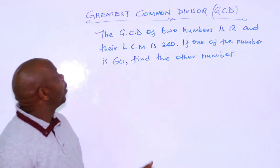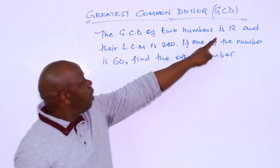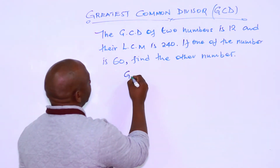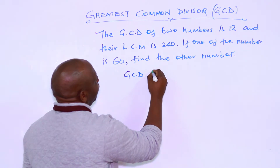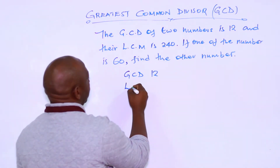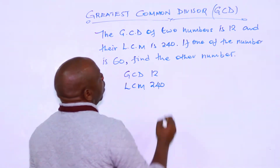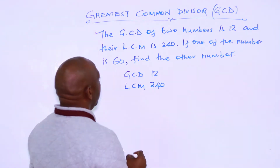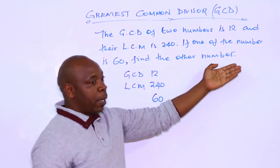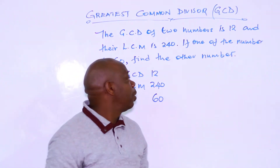We are going to consider a question on GCD and LCM. The GCD of two numbers is 12 and the LCM is 240. If one of the numbers is 60, find the other number. The best method to use here is the factor method.